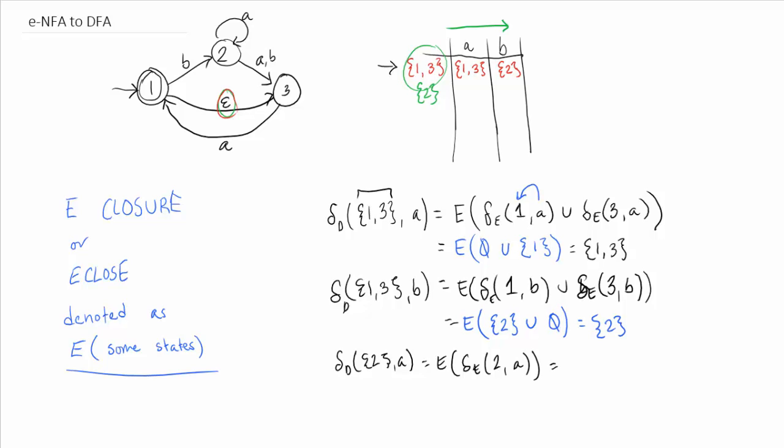And we end up with the closure of, there's more than that. So we end up with 2. So 2 on A goes to itself as well as 3. So we end up having to get the closure of 2 and 3 because there are no epsilon transitions going from 2 or 3. That is just equal to 2, 3.